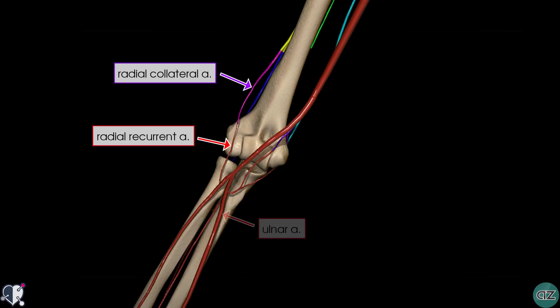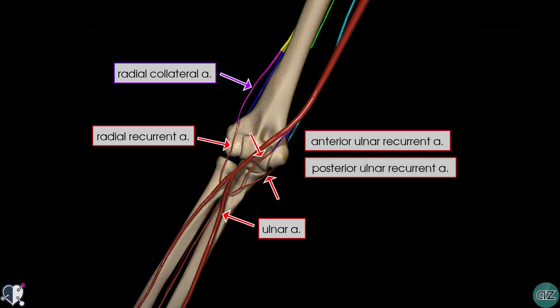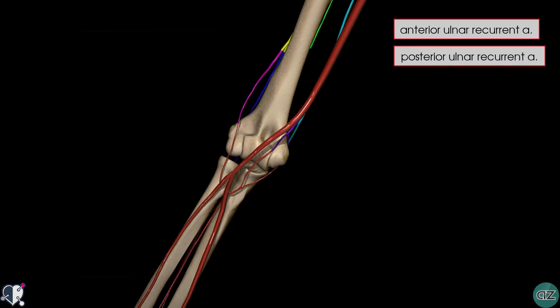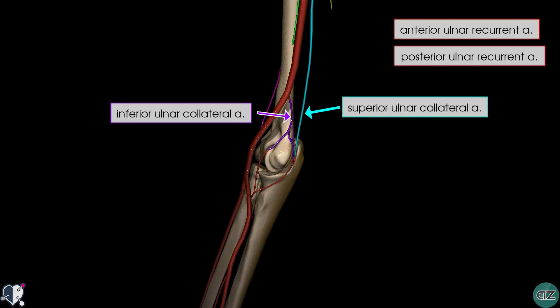The ulnar artery passes along the medial aspect of the forearm. Proximally, it gives off the ulnar recurrent arteries. A recurrent artery is simply an artery which reflects back in the opposite direction of its parent artery. There are two ulnar recurrent arteries, anterior and posterior. In this model they're seen originating from a common trunk, but often they will arise directly from the proximal ulnar artery. The superior and inferior ulnar collateral arteries, arising directly from the brachial artery, anastomose with the ulnar recurrent arteries.